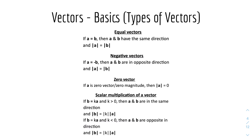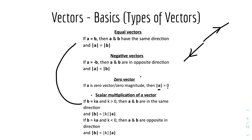And we have the types of vectors. We have equal vectors: if A equals B, then A and B have the same direction, and the magnitude of A equals the magnitude of B. But if there are negative vectors, if A equals negative B, then A and B are in the opposite direction, and the magnitude of A equals the magnitude of B — they will be the same length. And for zero vectors, if A has zero magnitude, then the magnitude of A equals zero. And for scalar multiplication: if B equals kA where k is greater than zero, then A and B are in the same direction, and the magnitude of B equals k times the magnitude of A. But if k is less than zero, then A and B are in the opposite direction.